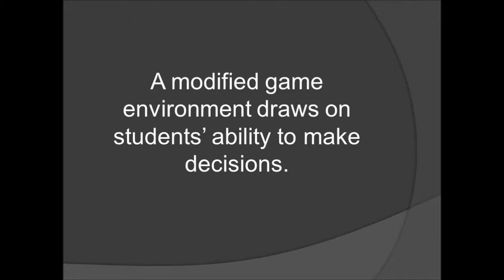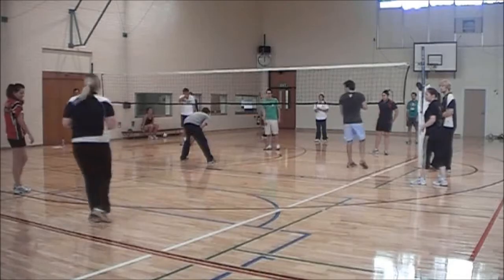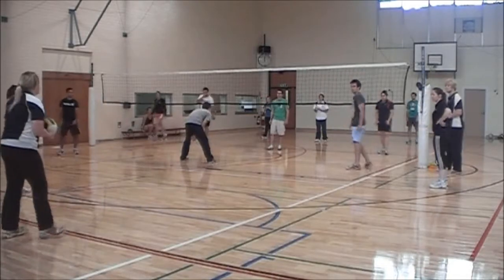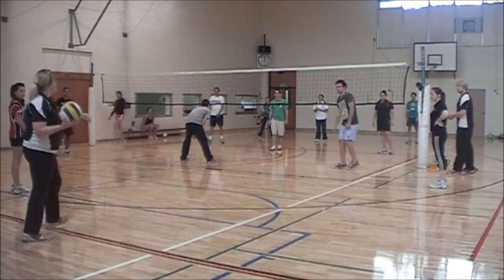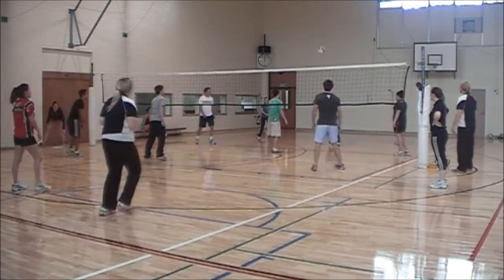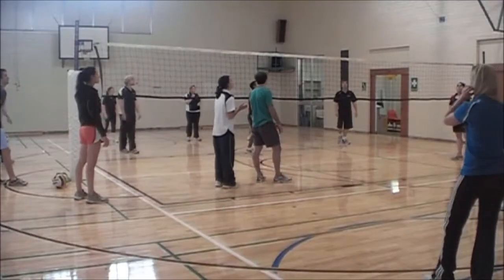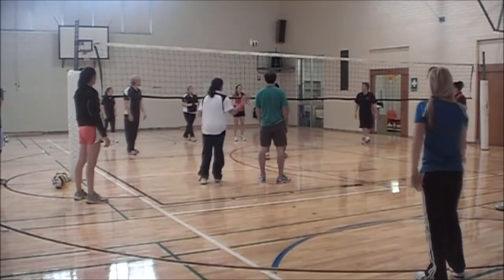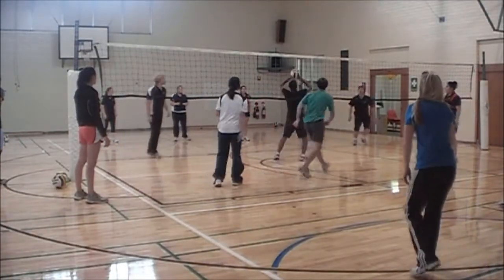This lesson demonstrates how a strategic problem is implemented into a modified game environment, which ultimately draws on students' ability to make decisions. In this game, the students were asked to rainbow serve and were asked to catch the ball when it was returned over the net. By focusing on the game in this context, students are encouraged to develop a greater understanding of the game.